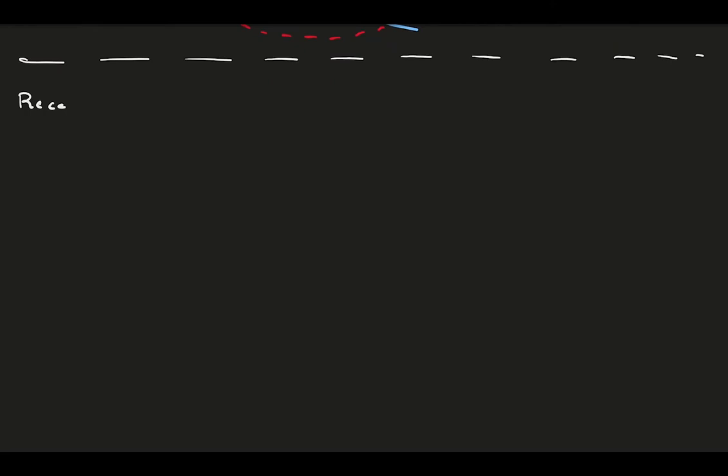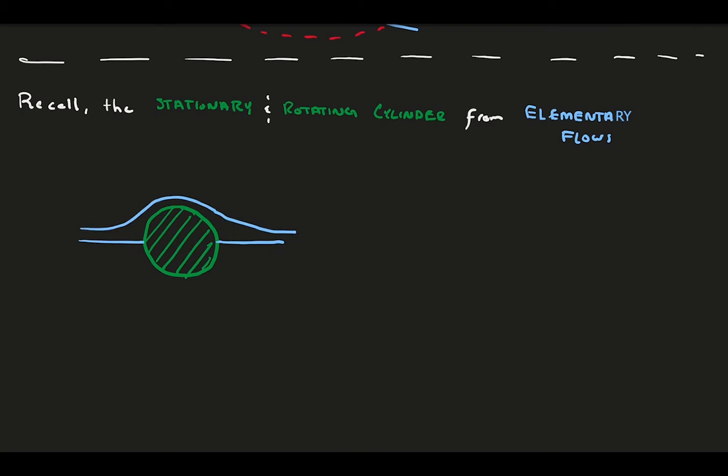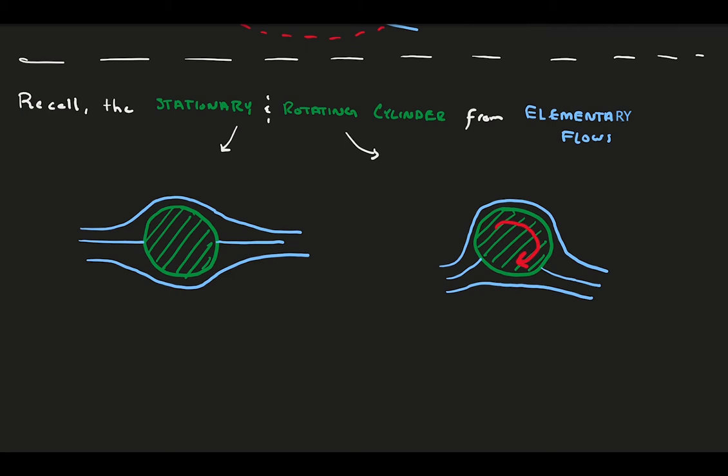So let's jump in. If you remember, in the last video we ended with the stationary cylinder and the rotating cylinder. For the stationary cylinder, you might notice that the flow is symmetric about the vertical plane, meaning there is no drag produced by the flow, and it is symmetric in the horizontal plane, meaning there is no lift.